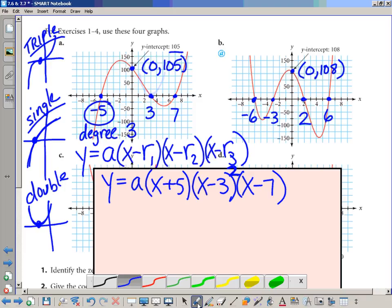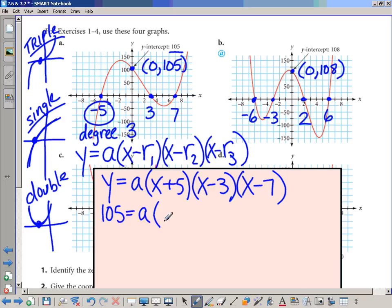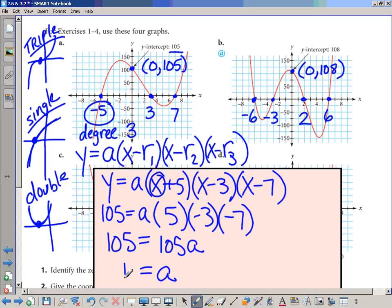We do have all single roots here, so we have all exponents of one. Our next step is to take the y-intercept 105 and solve for A. If we're putting in zero for x, this is going to be a five. If we're putting in zero for x, that's going to be a negative three, and that's going to be a negative seven. So we have 105 equals A times 5 times negative 3 times negative 7. So 105 would equal, let's see, 5 times 3 is 15, 15 times 7 is 105. So you have 105A equaling 105. That means A is one.